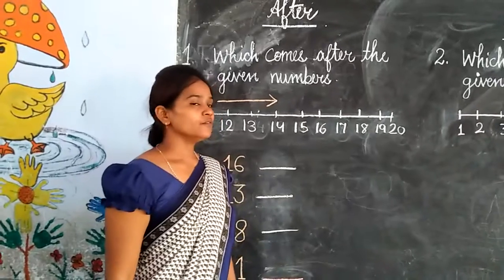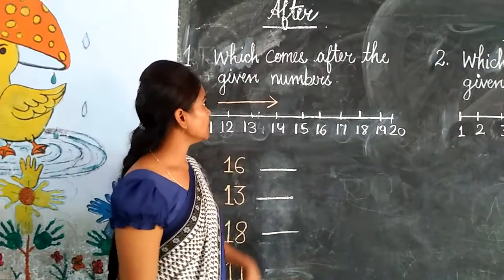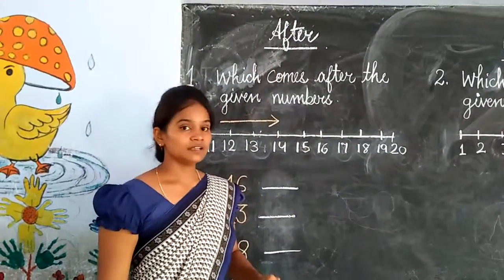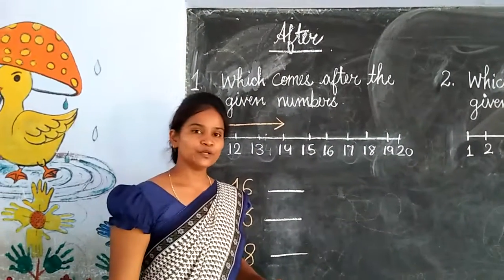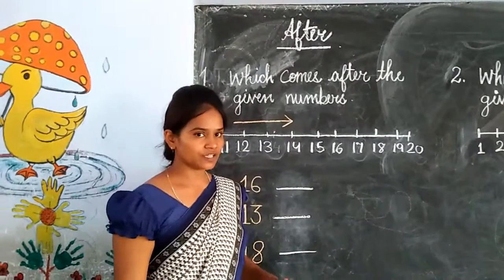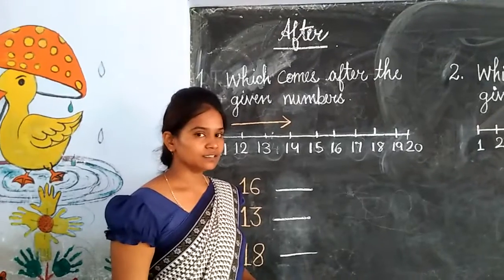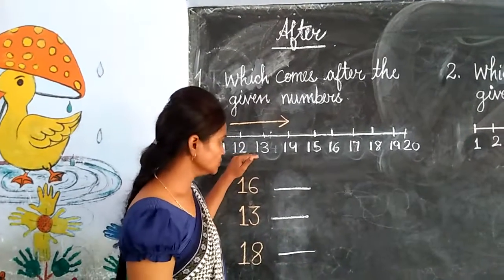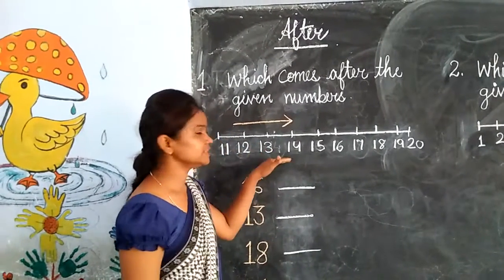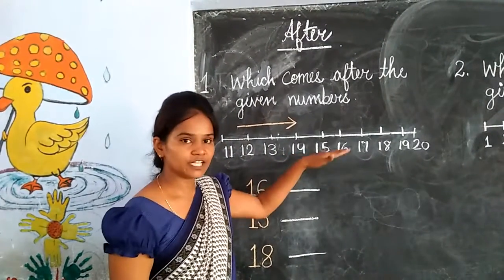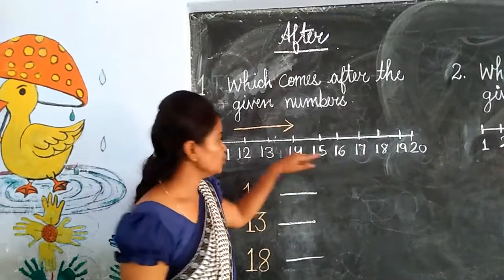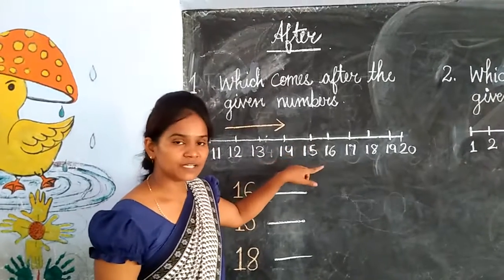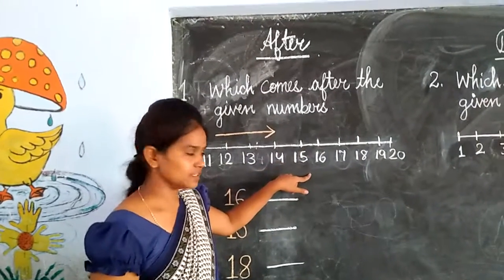Now we will learn about after. What do you mean by after number? When we count forward from the given number, we get the number after.